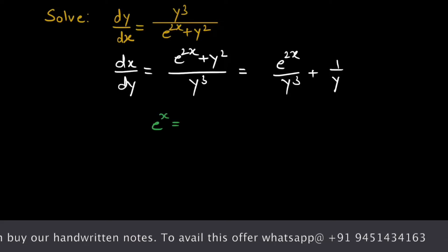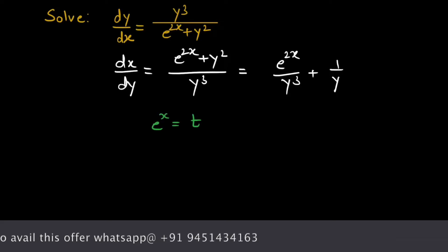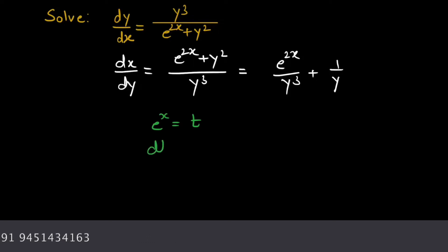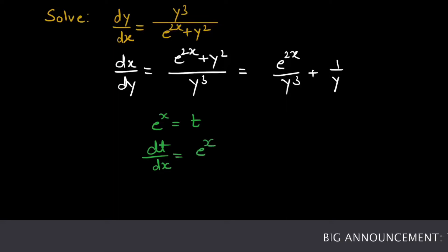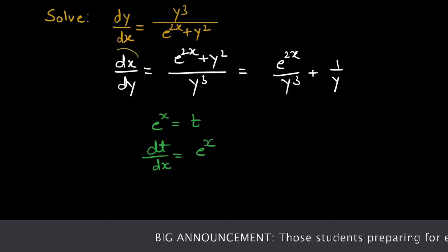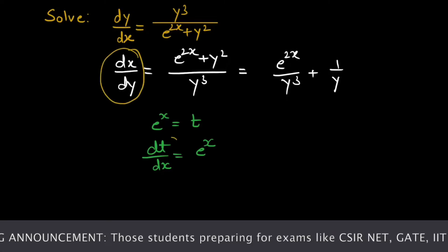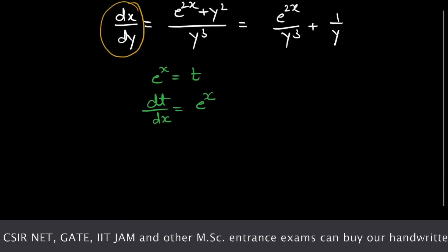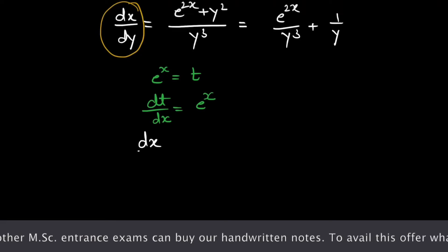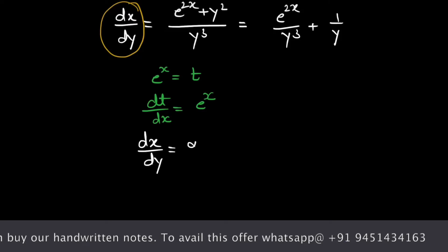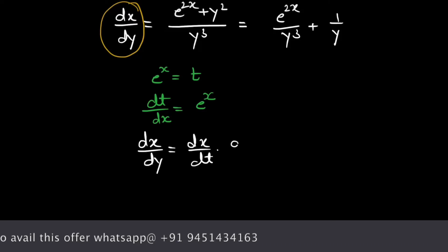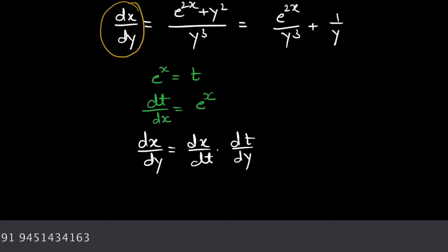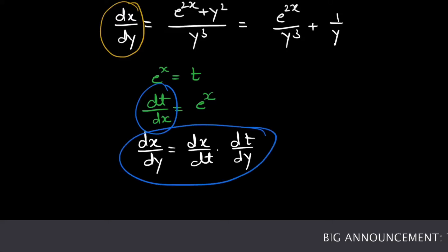Now let's assume e raised to power x is t. Differentiating this, we get dt/dx equals e raised to power x. Now let's find dx/dy using dt/dx, so dx/dy equals dx/dt times dt/dy. Now let's substitute this value into the equation.